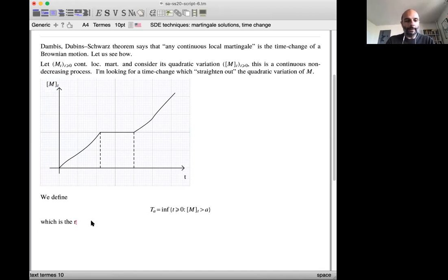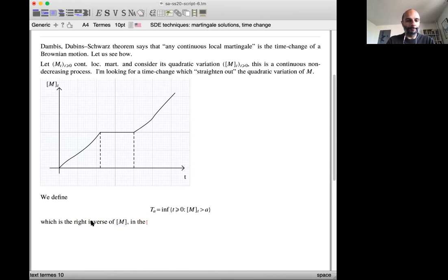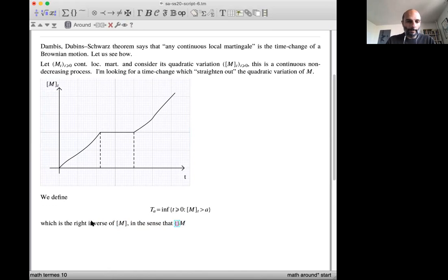This is the right inverse of the quadratic variation, in the sense. M, sorry, M computing turn A is A, by continuity of them.